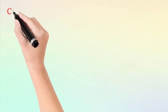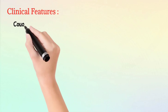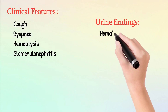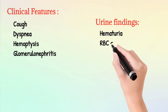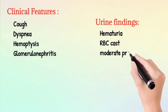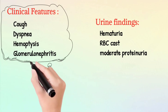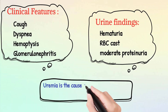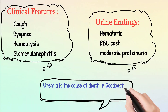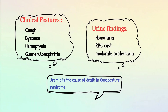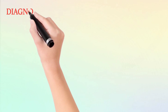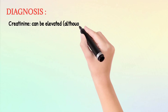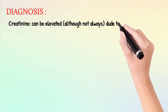Clinical features include cough, dyspnea, hemoptysis, and glomerulonephritis. Urine findings include hematuria, RBC casts, and moderate proteinuria. Uremia is the cause of death in Goodpasture syndrome. For diagnosis, creatinine can be elevated, although not always, due to renal involvement.